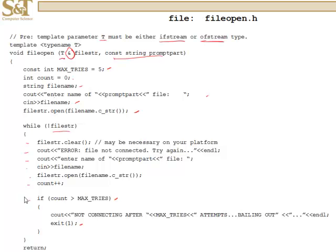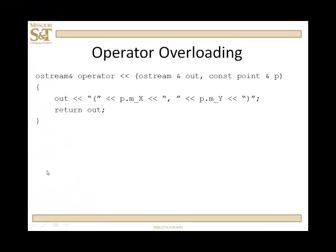That way, we can't leave the execution of this function unless, one, we connect our stream to the file, or two, we simply fail five times and we're out of there.